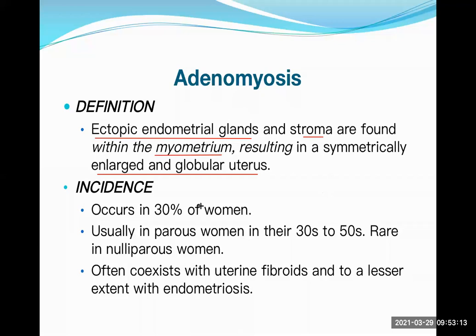Adenomyosis occurs in almost 30 percent of women, in the reproductive age group from about 30 to 50 years. It is rare in nulliparous women (who have never been pregnant). It often coexists with uterine fibroid and, to a lesser extent, with endometriosis — that's why these topics are studied together.